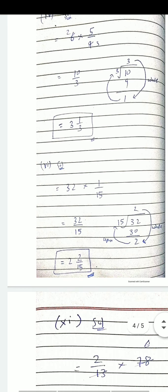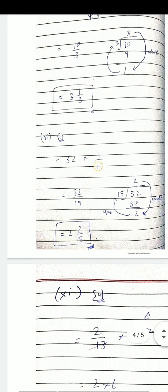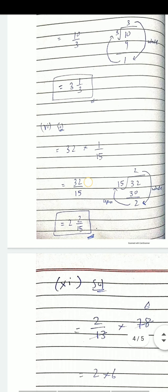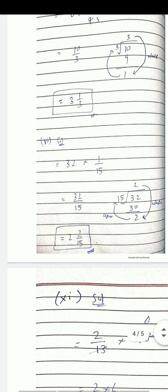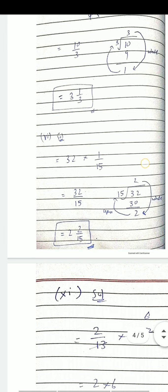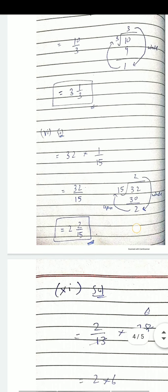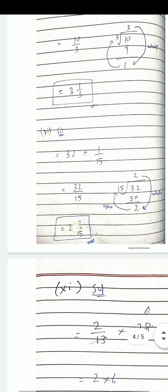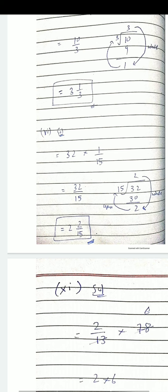Question نمبر 6: 32 multiply by 1/15۔ یہ 32×1=32 اوپر اور 15 نیچے۔ Convert کریں: 15×2=30، 32 minus 30 = 2 remainder بچتا ہے۔ تو answer ہے 2 whole number 2/15۔ دیکھو اب numerator چھوٹا ہوگیا اور denominator بڑا ہوگیا — یہ proper fraction بن گئی۔